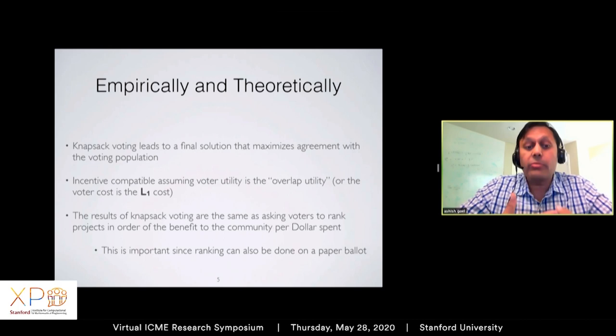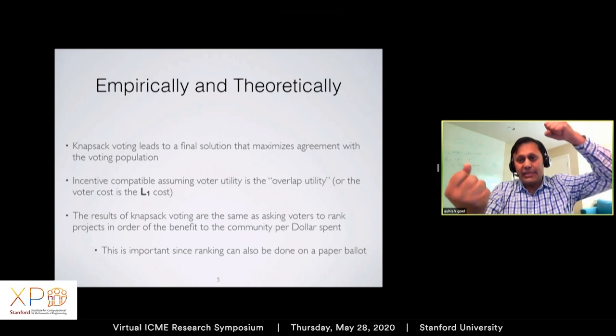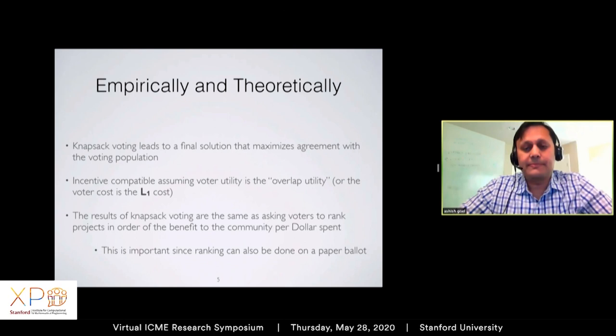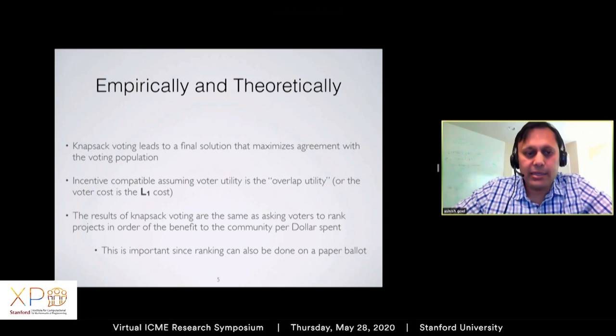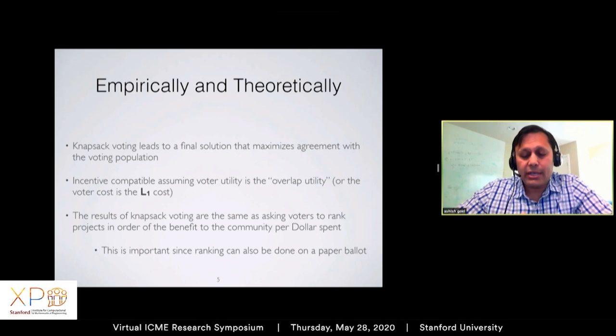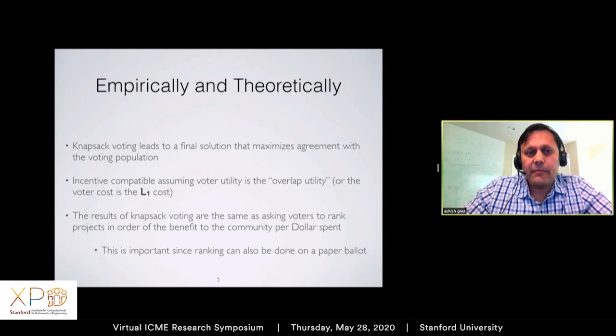We can formally show that knapsack voting leads to a final solution that maximizes agreement with the voting population. We also show it's incentive compatible, assuming voters' utility is what we call the overlap utility — where my penalty is the distance between my ideal budget and another proposed budget as points in high-dimensional space. Incentive compatibility is very hard to achieve in elections of this type, so it's remarkable that such a simple switch in voting method achieves it. The platform has been widely adopted and many cities now do knapsack voting.